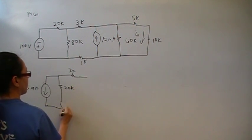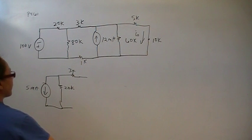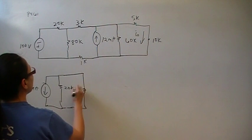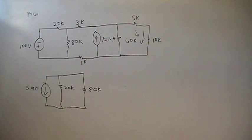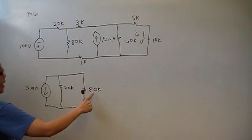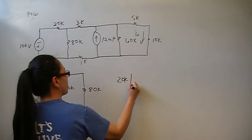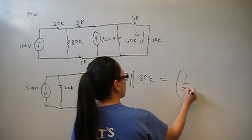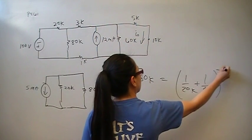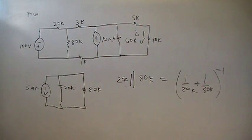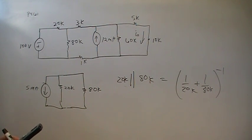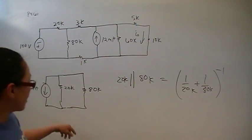Now we've got 20K in parallel with 80K, and we can combine those. The equivalent resistance of 20K in parallel with 80K is 1 over (1/20K + 1/80K), which gives 16K. Some people prefer to do 80 times 20 over 80 plus 20, but the universal formula works for everything, not just two parallel-connected resistors. So all of that reduces to 5 milliamps in parallel with 16K.